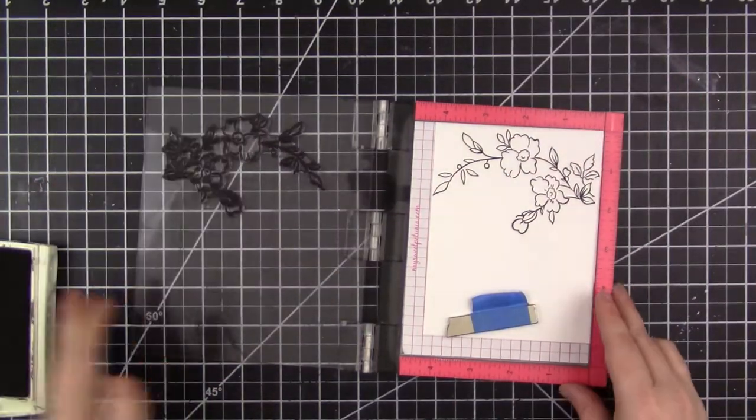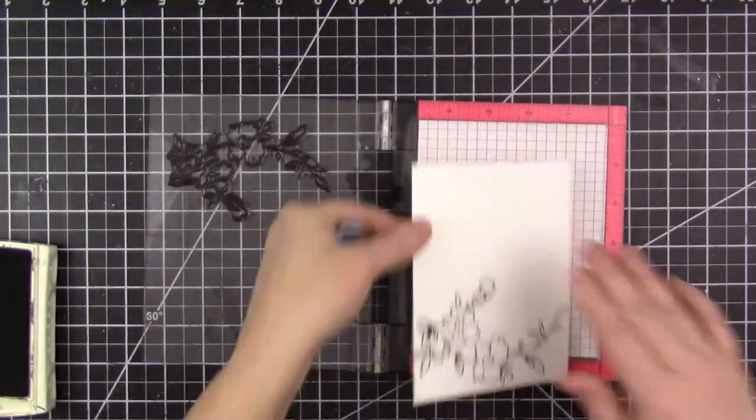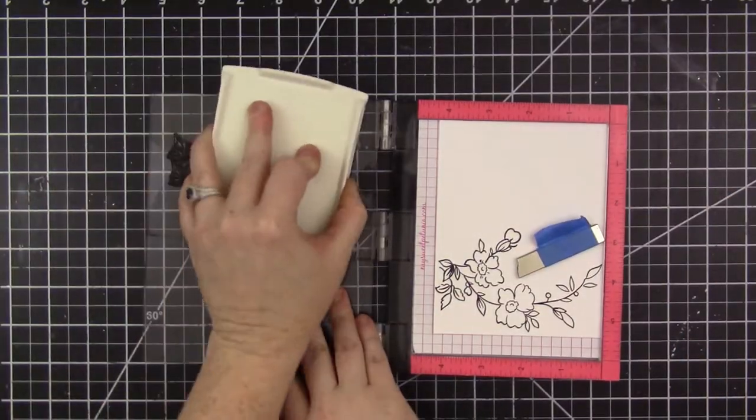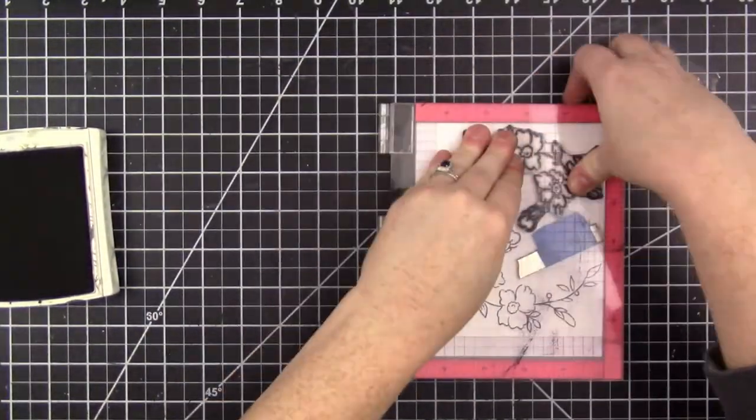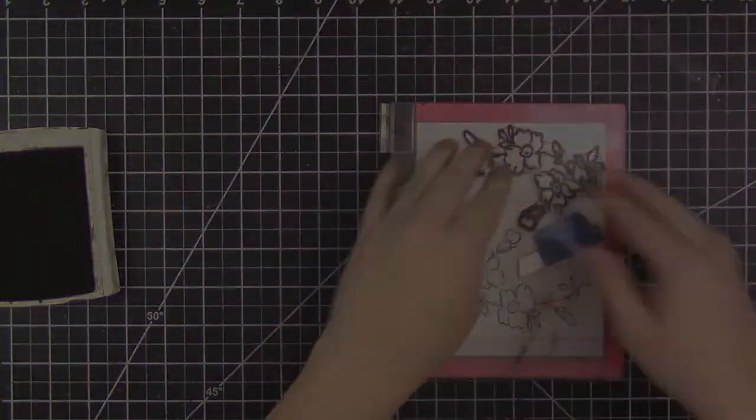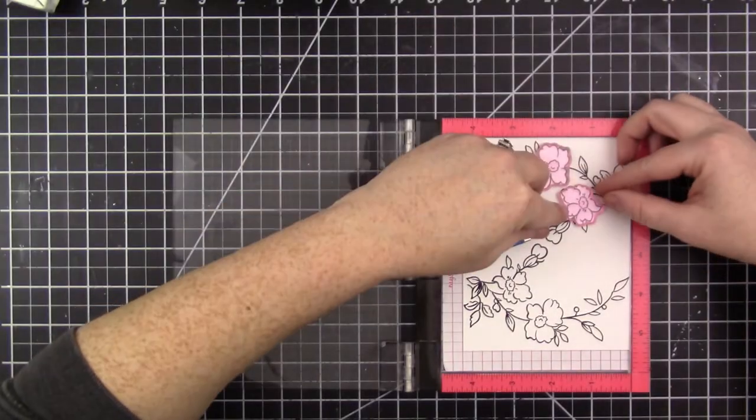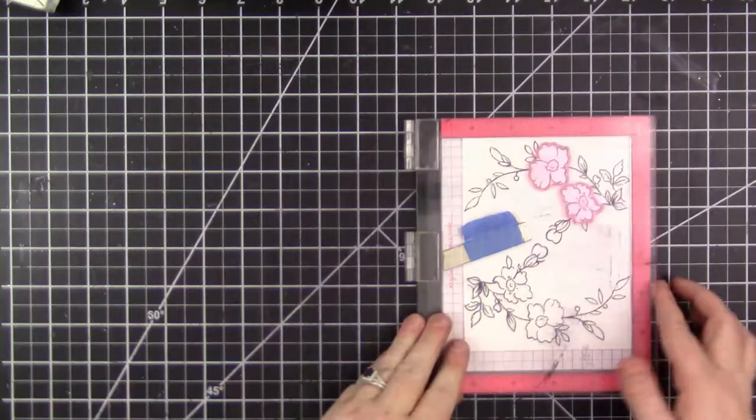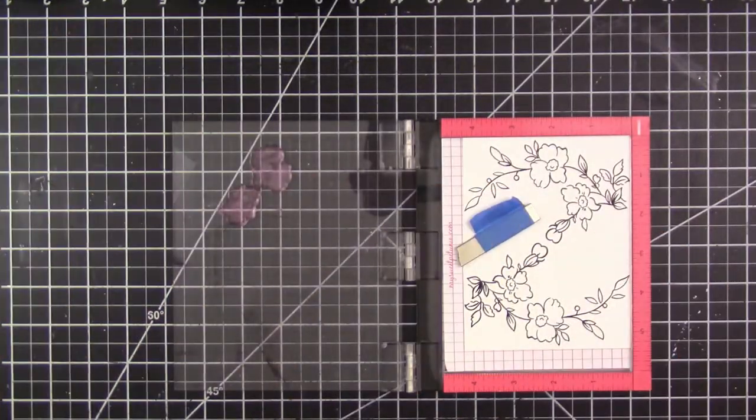I can quickly stamp multiple images. I'm stamping the outline image from the set in black ink, then flipping the paper around to stamp another.